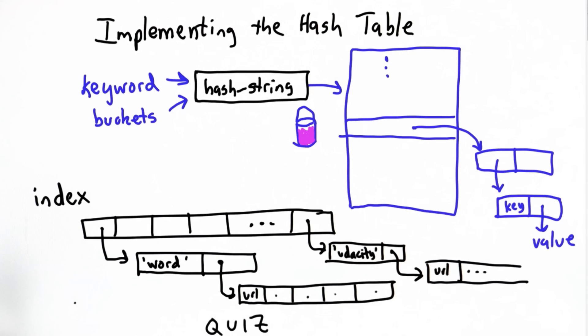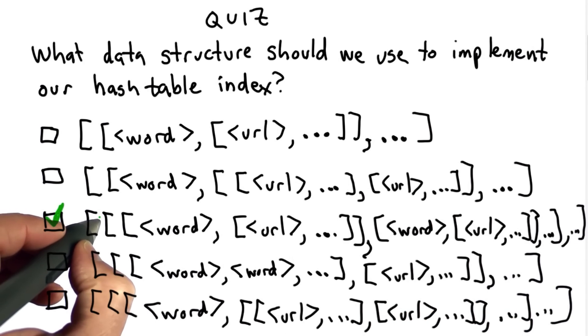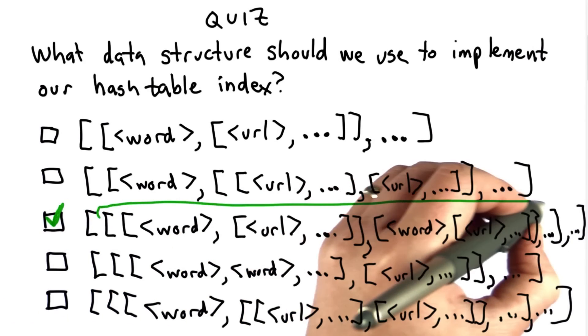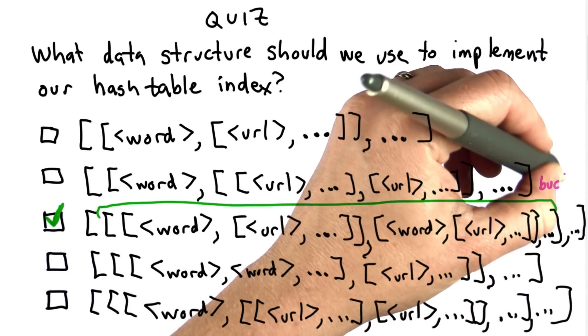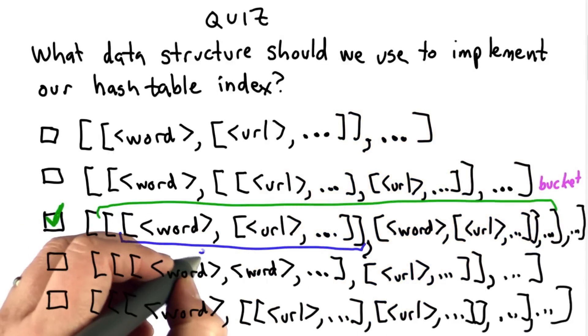So the structure that corresponds to that most closely is this one, where we have a list, each inner list here. So this corresponds to a bucket. And then within the bucket, a word and a list of URLs is one entry.